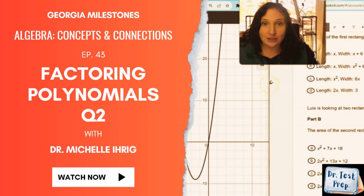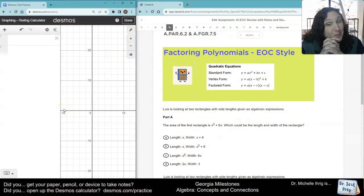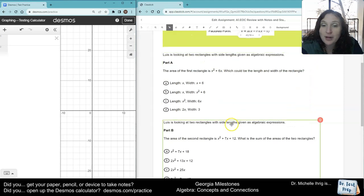All right, let's take a look at this next set. I am pulling this up as a graphing calculator question because I do think there's ways that you can do it. It says, Luis is looking at two rectangles with side lengths given as algebraic expressions. The area of the first rectangle is x squared plus 6x. What could be the length and the width?